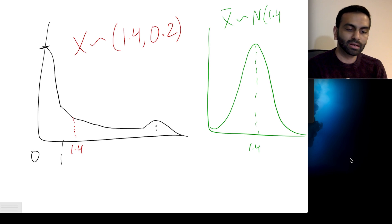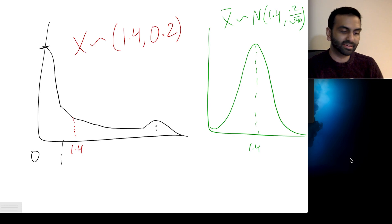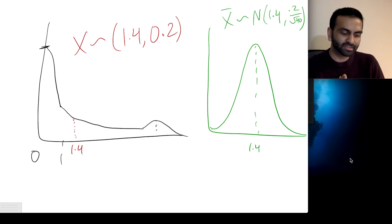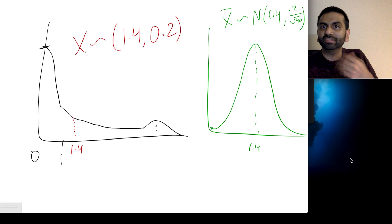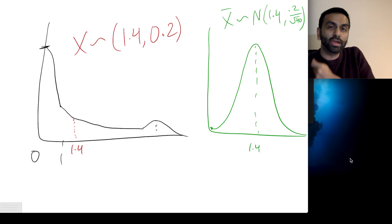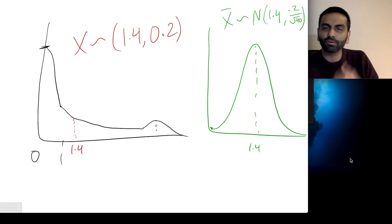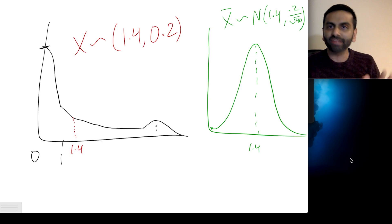The x-bar distribution is still going to have the same average of 1.4, but its standard deviation instead of 0.2 is going to be 0.2 over root 40 — because the standard error, which is the standard deviation of x-bar, is s over root n. This makes sense: even though zero is really common in the original distribution, zero is not likely for x-bar, because you'd need all 40 randomly selected people to answer 0 — that's a lot less likely, even though it's very likely any one person answers 0. That is the central limit theorem and standard error.